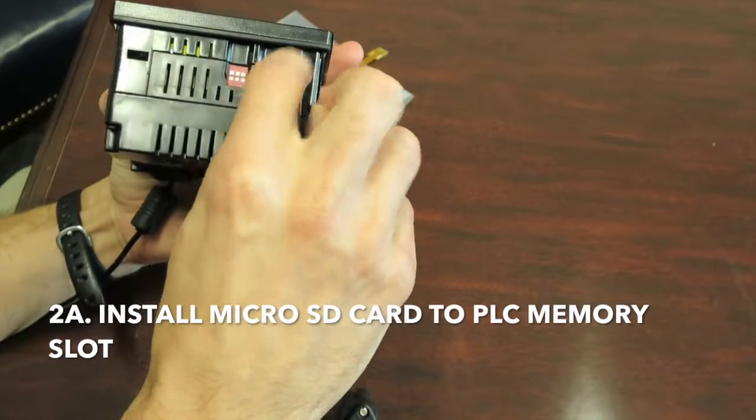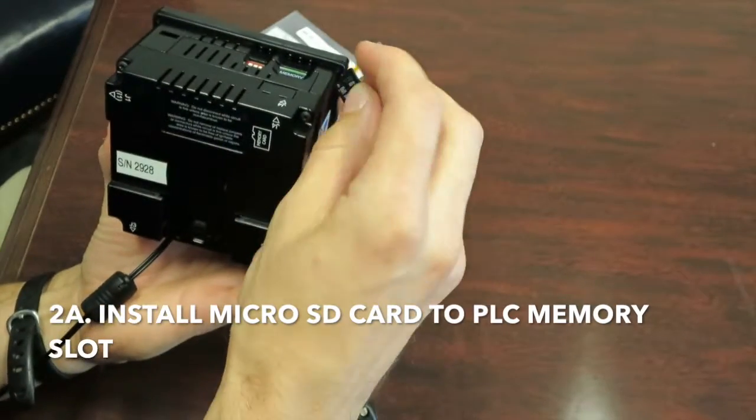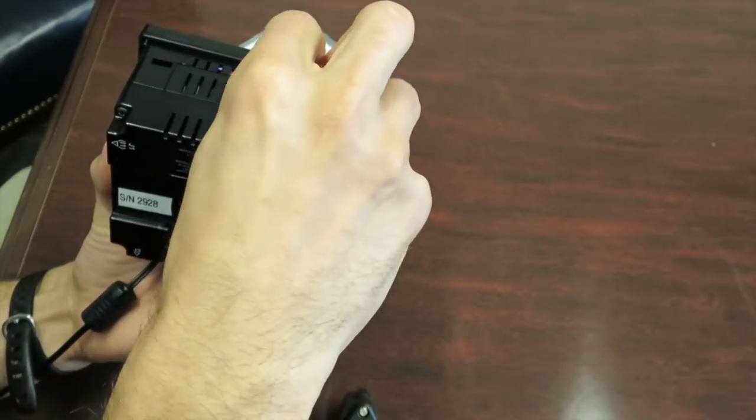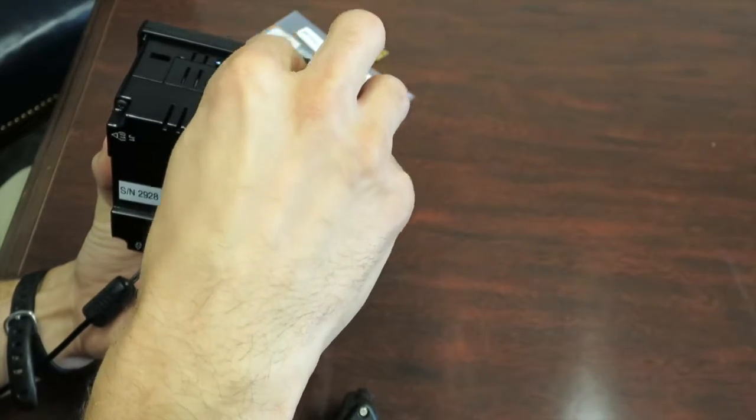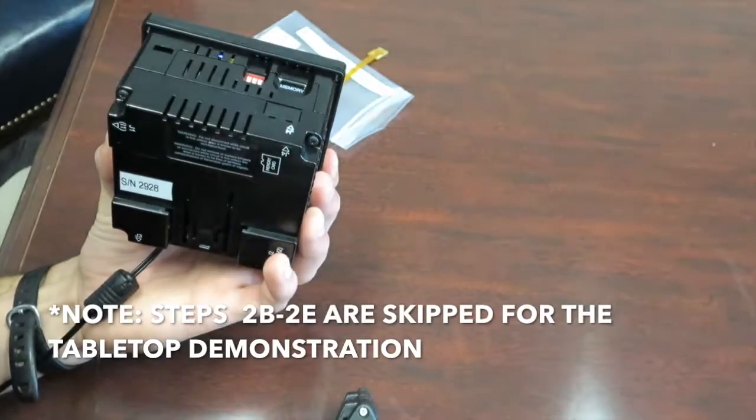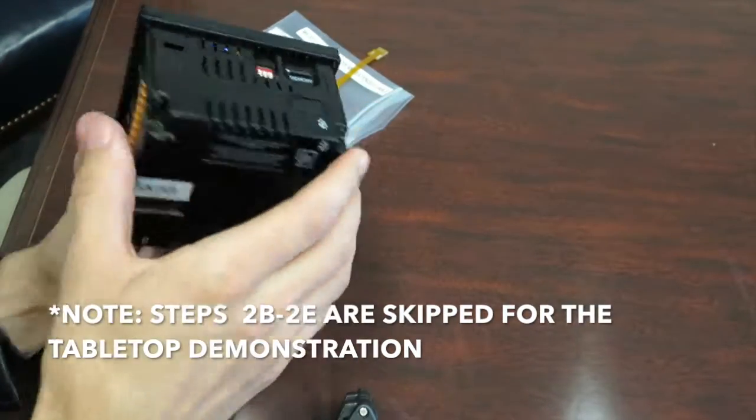You're going to insert it to this memory slot. It's a blind insertion when it's installed in the sterilizer, so it's a little difficult, but you can kind of slide your hand in there. You're going to insert until you feel a little click and hear it. Then you know it's been inserted.